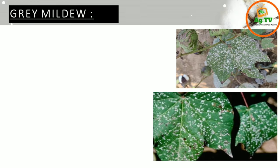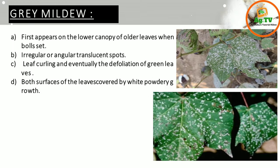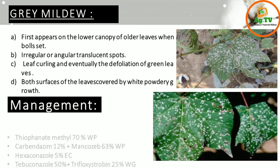Next is grey mildew. You can see the symptoms of grey mildew. Usually grey mildew will show on older leaves in the lower canopy. You may find it when the bolls are being set. You can see irregular translucent spots anywhere on the leaves. The leaves drop and you can see white powder on the bottom of the leaves.